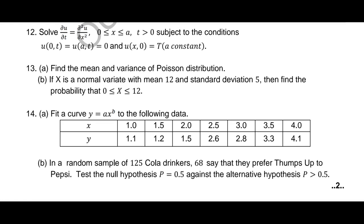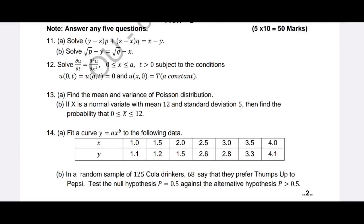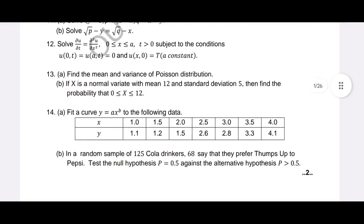Question 13b asks: X is a normal variate with mean 12 and standard deviation φ — find the probability that 0 ≤ X ≤ 12. So question 13b is a normal distribution problem. Then question 14a is fitting a curve of the form y = a·x^b to the following data.